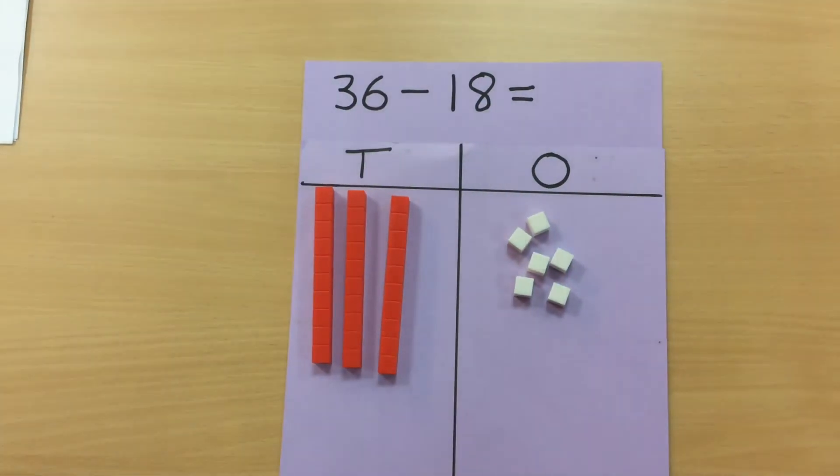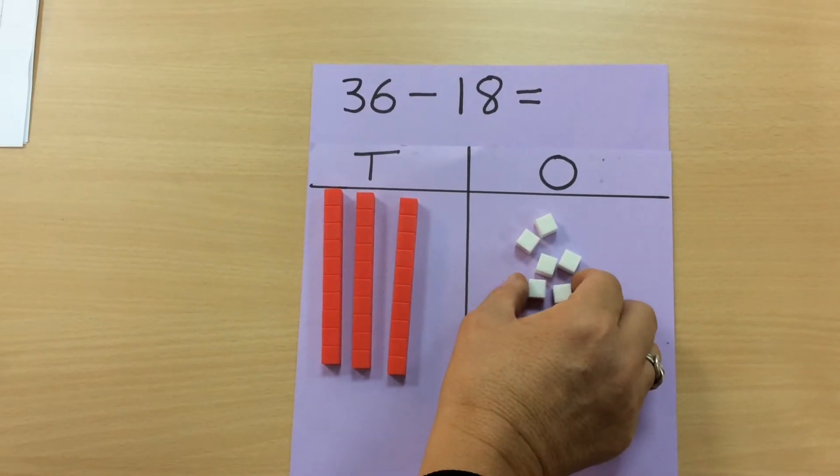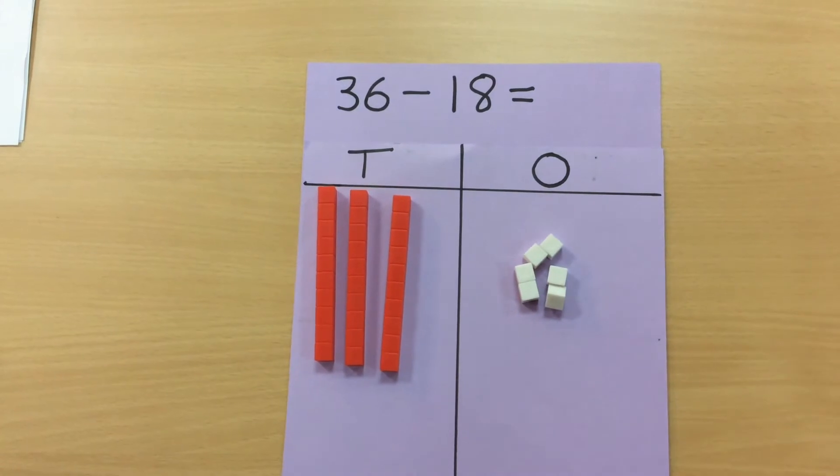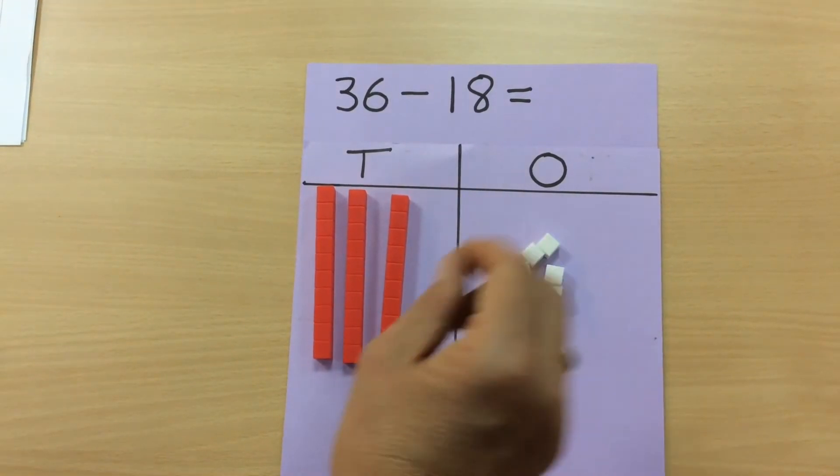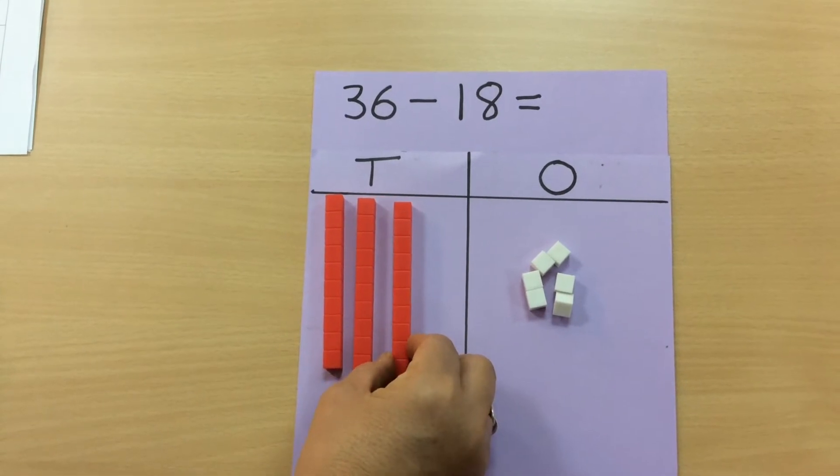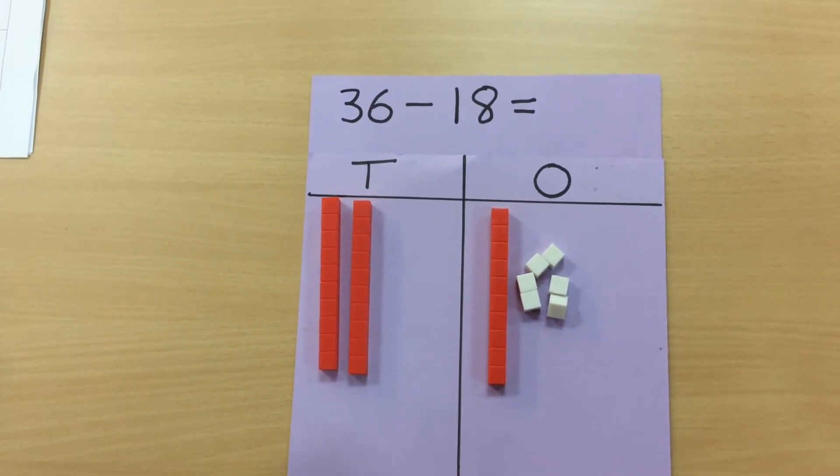Looking at this, we need to take away 18, and if the children have got the equipment then they can see that they've only got six, so they can't take the eight away. So they need to borrow, they need to exchange and borrow one ten, so they physically move the ten into the ones.